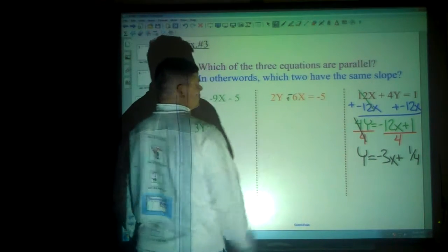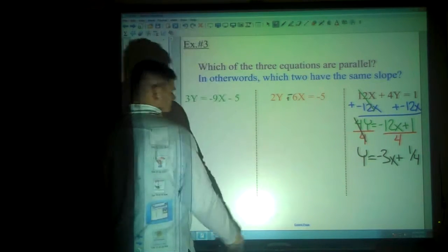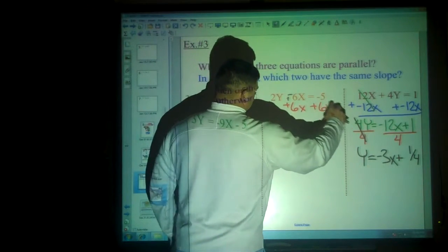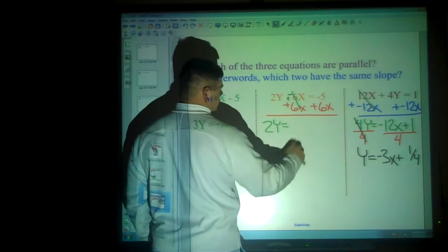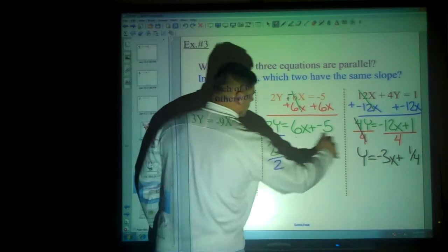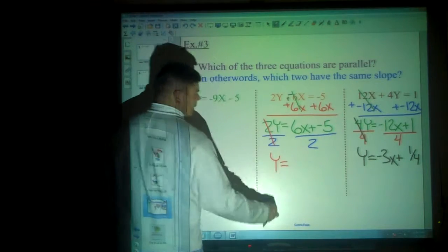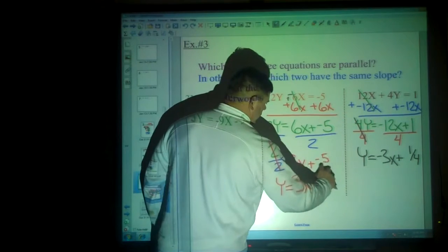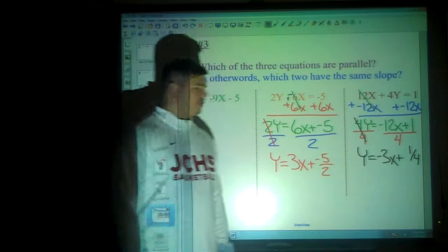Quick adjustment. Plus positive 6x. So now we have 2y is equal to 6x plus negative 5. We will divide by 2. Which, again, with heart-shaped division, 6x over 2 is 3x. Negative 5 over 2. I can leave it as an improper fraction if I want. Now, here's a slope of 3 and here's a slope of negative 3. Are those parallel? No. One's positive. One's negative. That's not parallel.